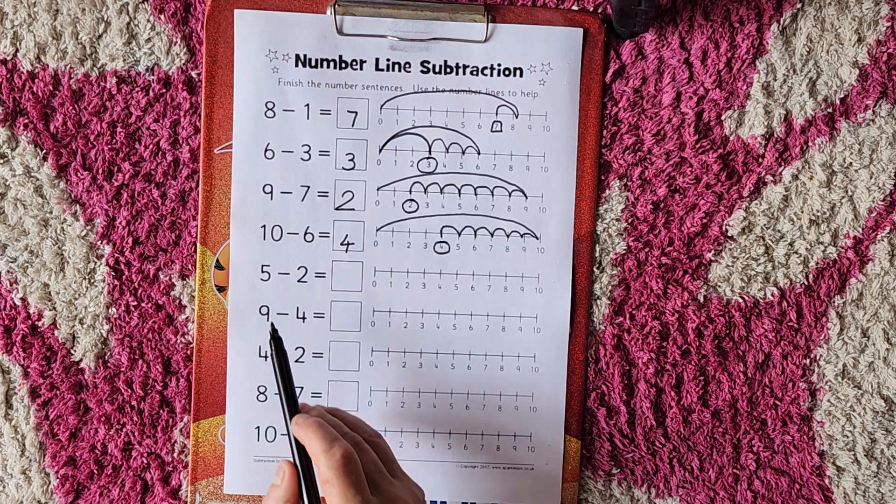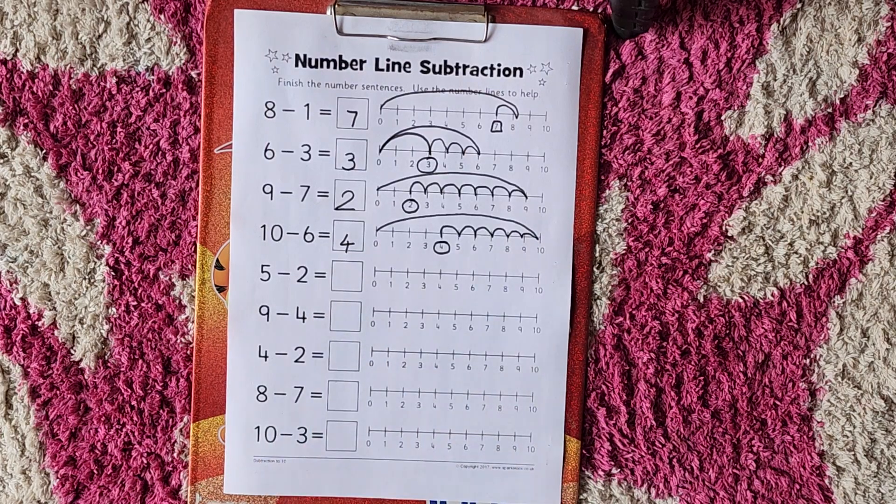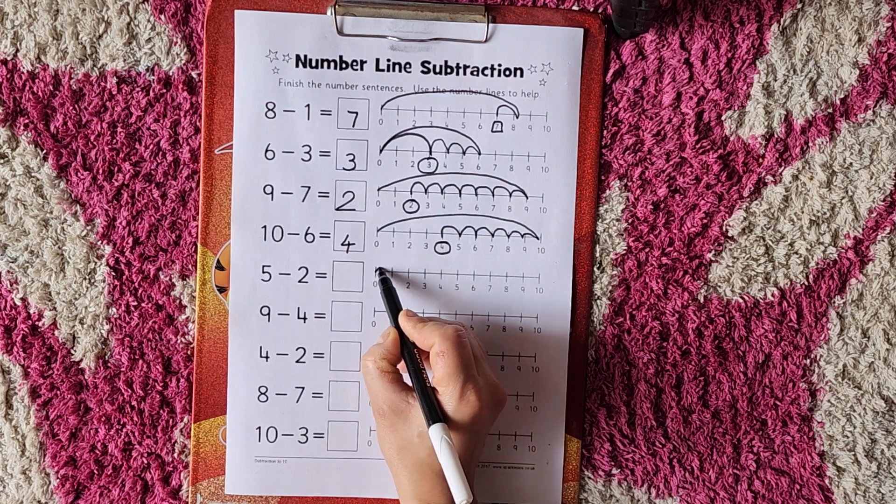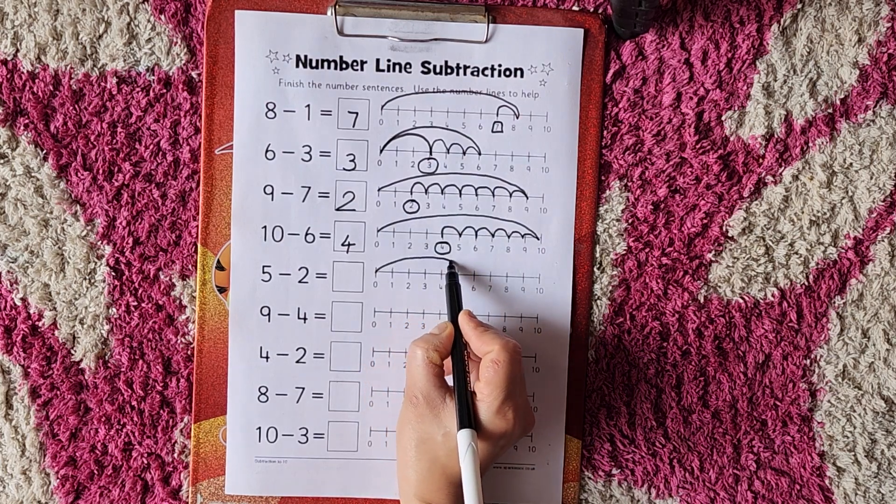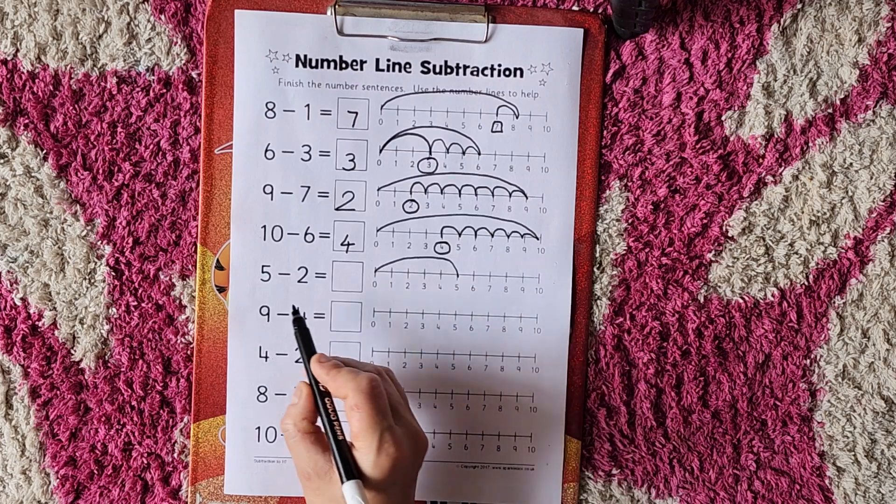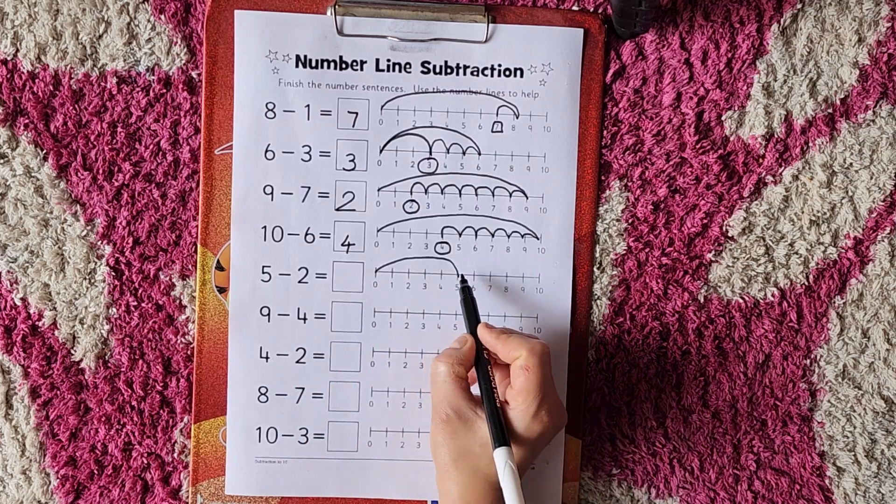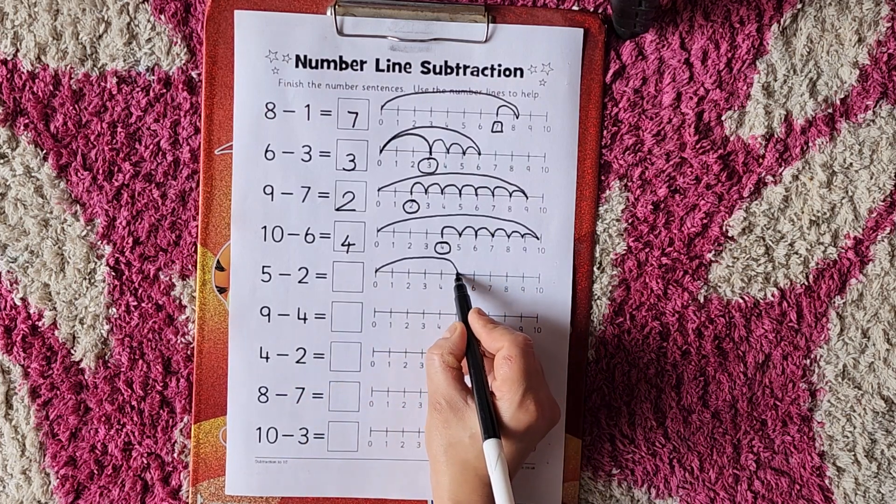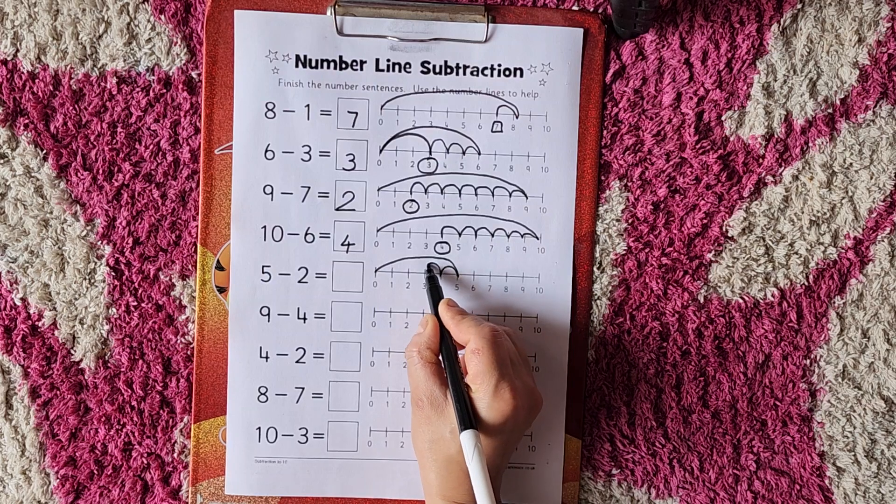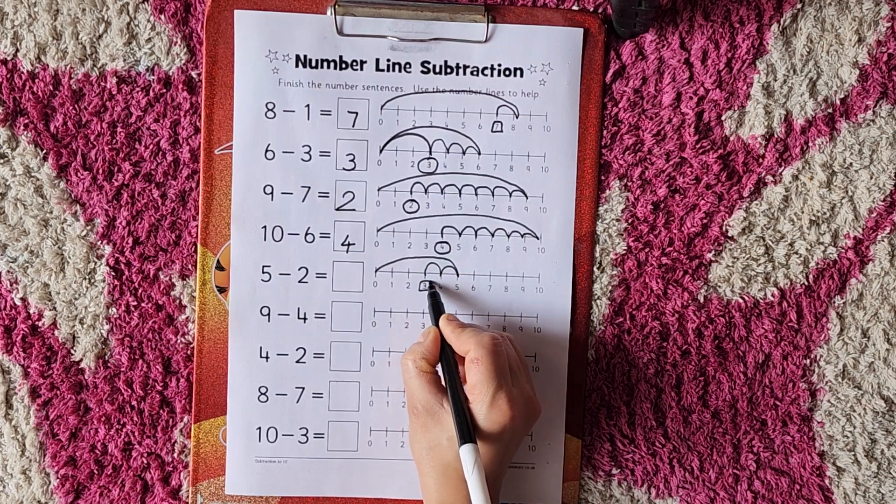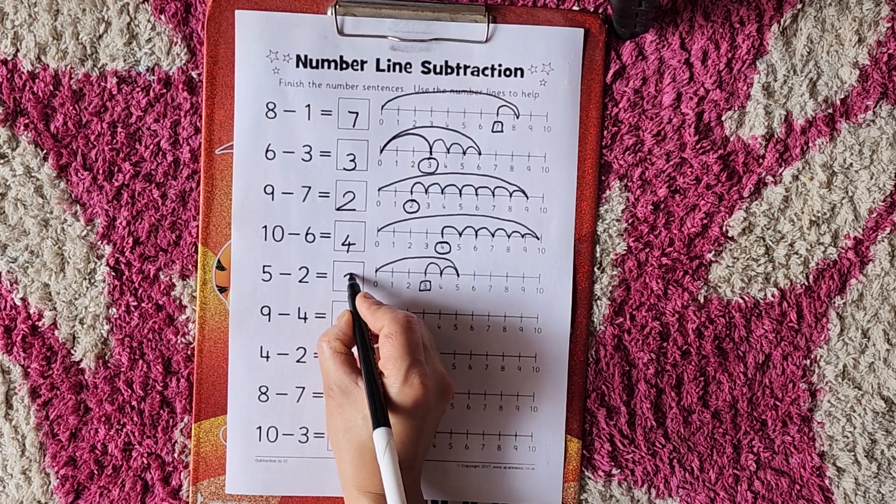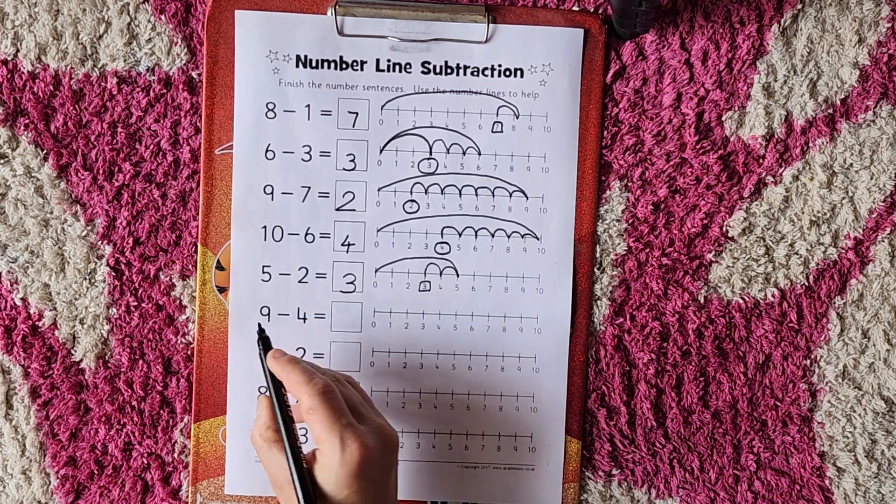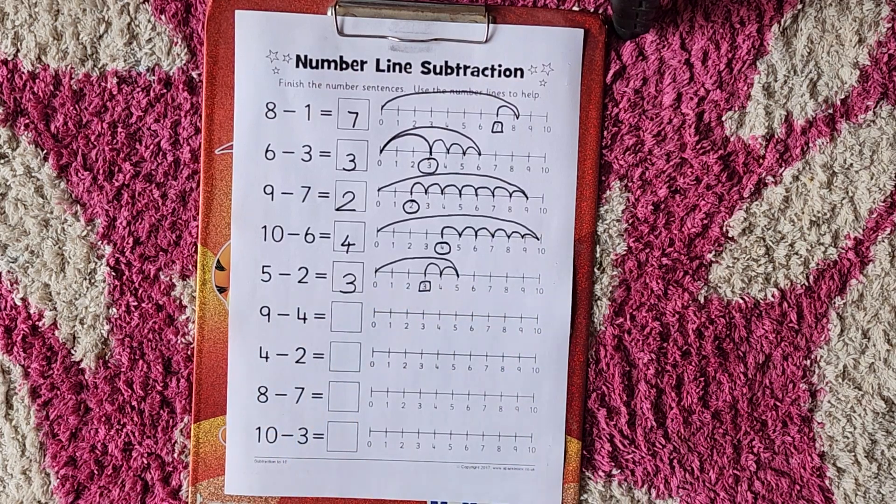Now you will tell me. 5 minus 2. Yes. Put the pencil on 5. Good. Now go to 5 number. Now 5 minus 2, where we will go? 2 steps back. 1, 2. Where we will go? 3. Very good kids. So 5 minus 2 is equal to 3.